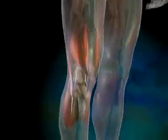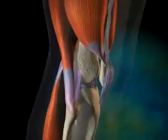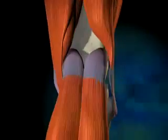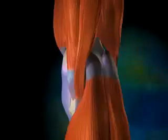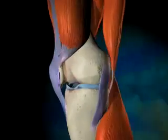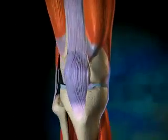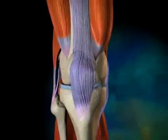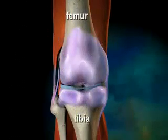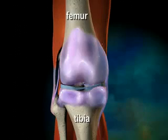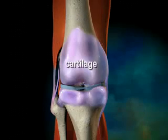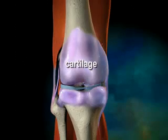In order to understand the changes that occur in the joints of a person with osteoarthritis, it is necessary to first understand how joints work. The two main bones of the knee are the femur and the tibia. In a normal knee joint, the connecting surfaces of these two bones are covered with cartilage, a smooth and strong material that cushions the impact between the bones.